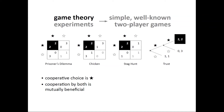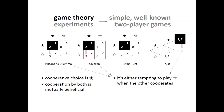Also, in these games it is either tempting not to cooperate with the other when you expect the other to cooperate — as in Prisoner's Dilemma and Chicken, and for the second player in Trust, where you can earn more for yourself at the other's expense if you defect while they cooperate.